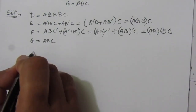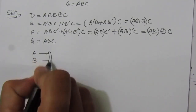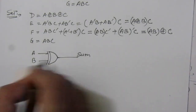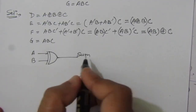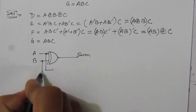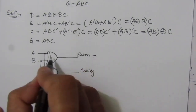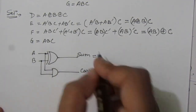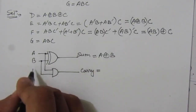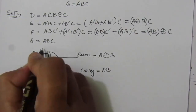In a half adder, we have two inputs A and B. We have an XOR gate, from which we get the sum — because it is a half adder circuit, the sum output is A XOR B. Then we have a carry output. Carry is nothing but A·B, produced by an AND gate whose inputs are multiplied. So this is the half adder circuit: two inputs and two outputs.